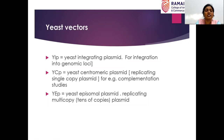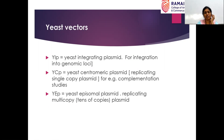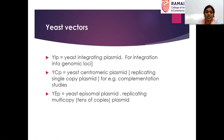Yeast integrating plasmid — this is used when you want to integrate your gene of interest into the host genome. Then yeast centromeric plasmid — it is used in complementation studies. Yeast episomal plasmid is used for replicating multiple copies of the plasmid. We will not be discussing the properties of these vectors in detail because we have already covered this portion.